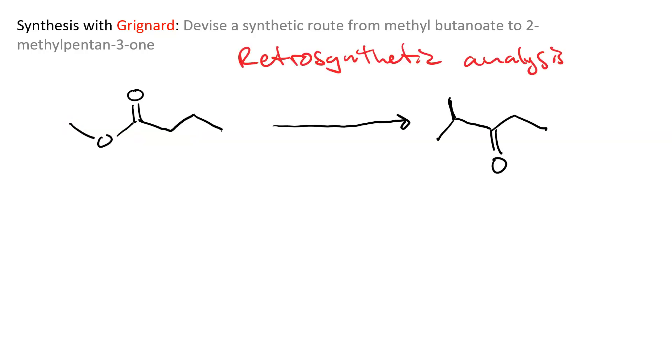And the tool that we've learned that we want to use here is retrosynthetic analysis. In other words, if we look at our final product, is there a bond that we see that we know how to make? Sure there is. We could oxidize an alcohol to make a ketone.